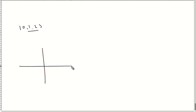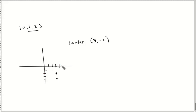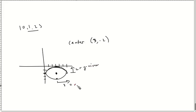Homework problem 10.1.23: they give me a graph. The center is at three, negative two. It goes up two, down two, and side to side three distance. So the Y minor is two while the X major is three.